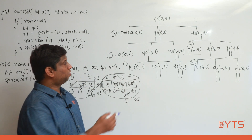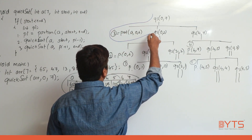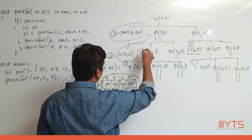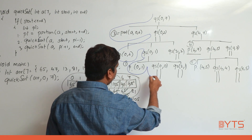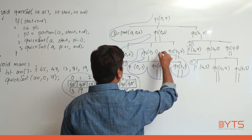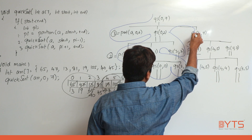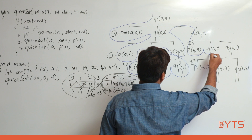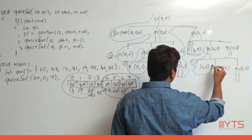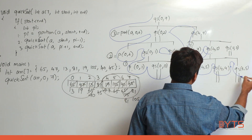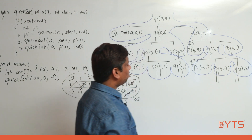Now we'll see in which order the functions are called. I started from here, went to partition, came back, completed this. From here again I came to partition, came back. Now this is completed, so then I come here — this is also completed. So always, this is how the call stack is happening.